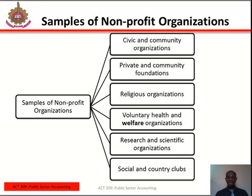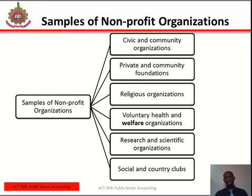Let's talk about voluntary health and welfare organizations. These generally provide guidance, training, goals, and services to the general public according to their specific missions. Examples include the Salvation Army, Red Cross, Boy Scouts, Girl Scouts, and so on. Non-profit organizations whose purpose is to find a cure for or help people with diseases such as cancer, diabetes, heart disease, or muscular dystrophy also fall into this category.